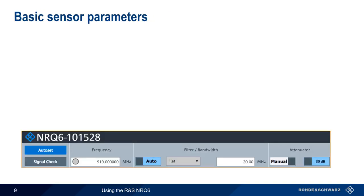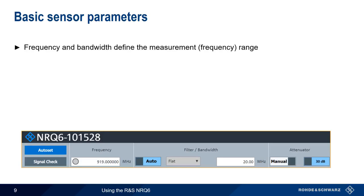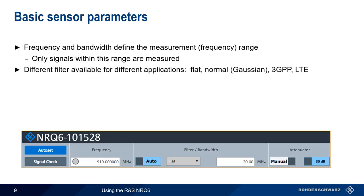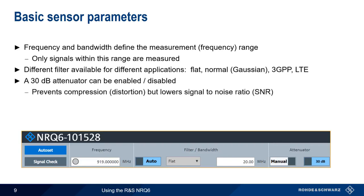Unlike a traditional power sensor, the NRQ is frequency-selective, and therefore the measurement range must be defined in terms of frequency and bandwidth. Only signals within this range will be measured by the NRQ. In addition to defining the bandwidth or filter width, different types of filters can be chosen based on the application — flat, normal, etc. A 30 dB attenuator can also be enabled or disabled. Enabling the attenuator will help to prevent compression and distortion, but will also lower the signal-to-noise ratio and increase measurement uncertainty.